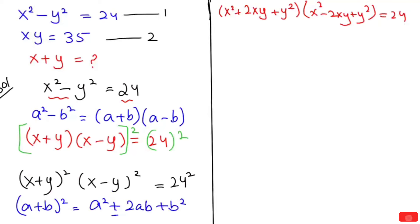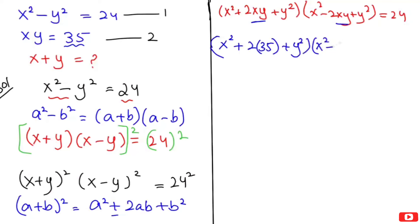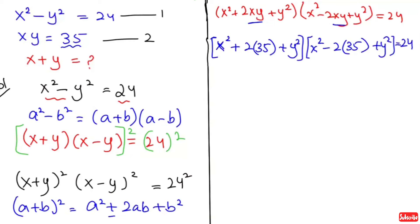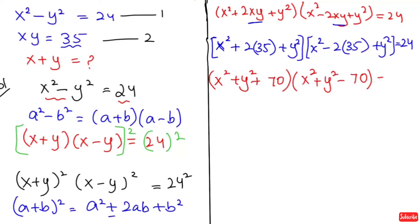Now I'm going to plug in the xy value here. Our xy value is 35, so we get x² plus 2(35) plus y² times x² minus 2(35) plus y² is equal to 576. This gives us x² plus y² plus 70 times x² plus y² minus 70 is equal to 576.